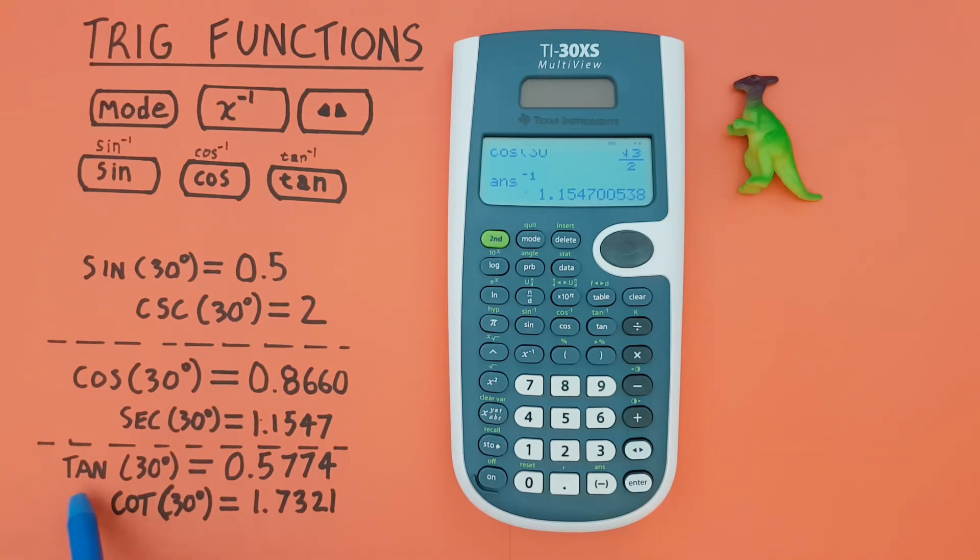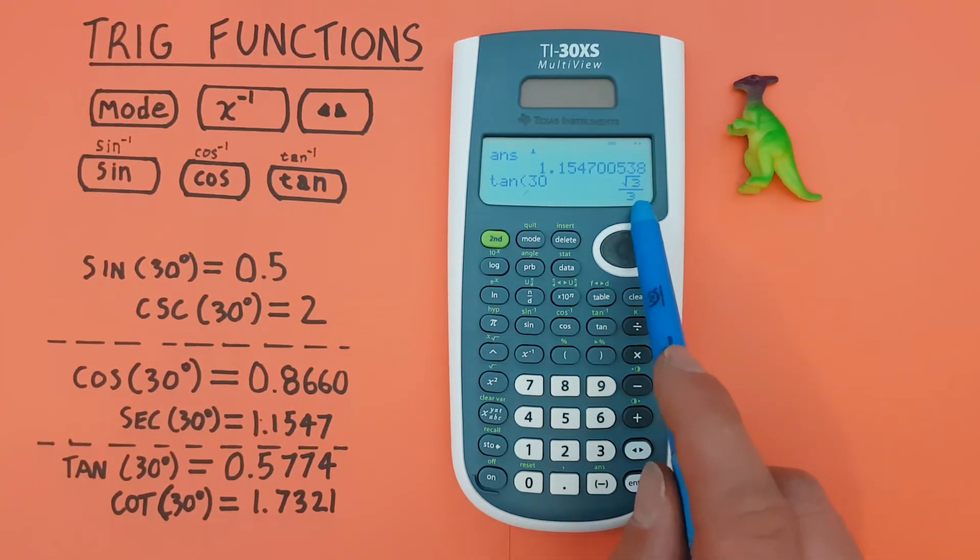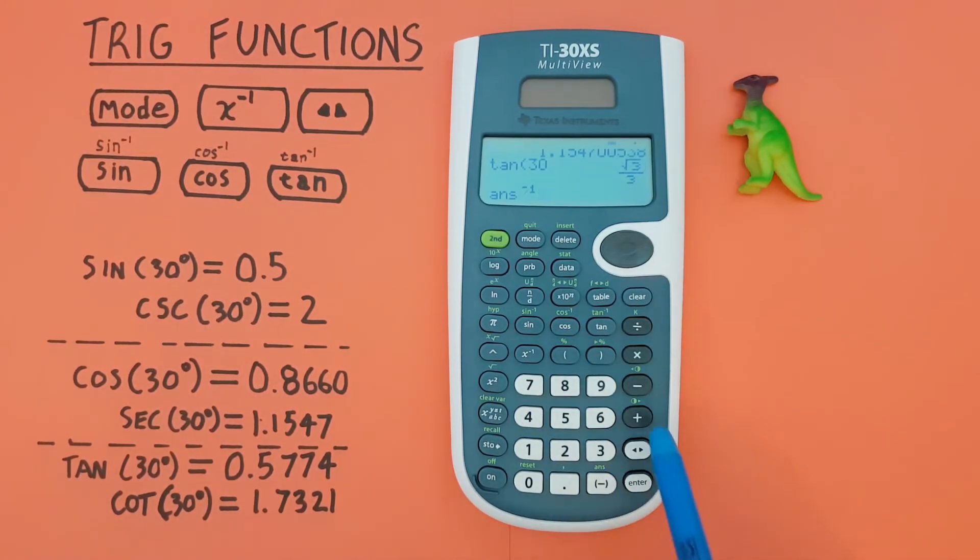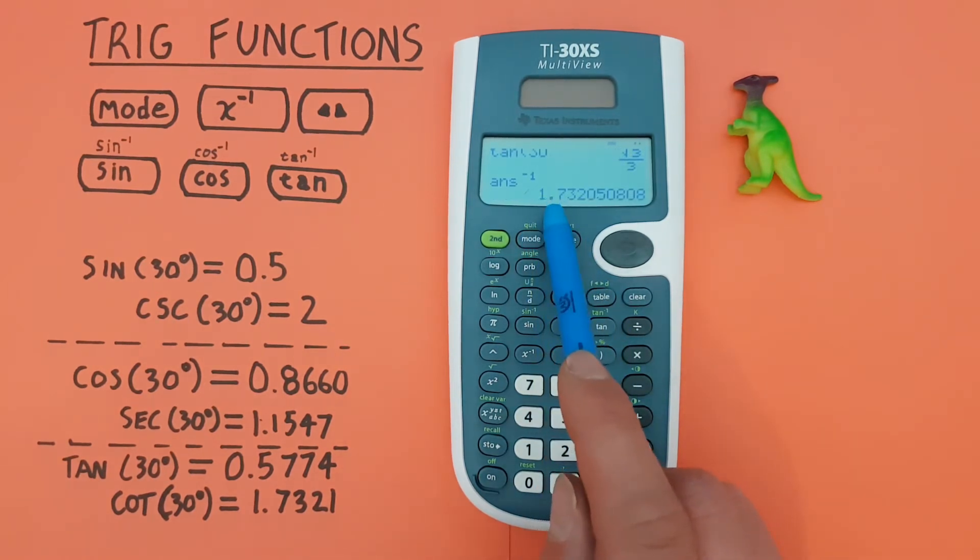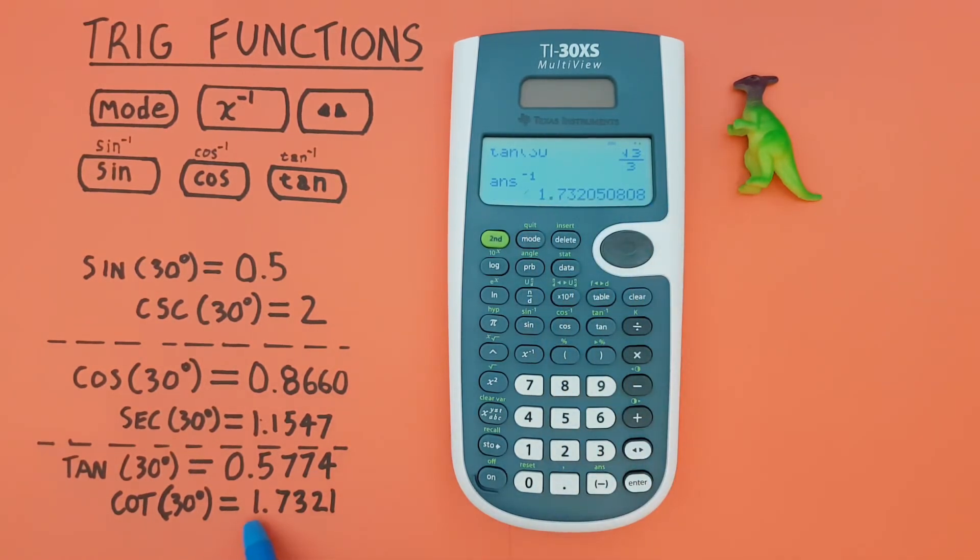And cotangent uses tan. So, we go tan of 30, and inverse, to get 1.732, etc., which is correct.